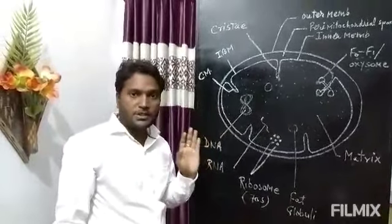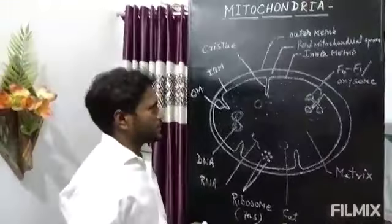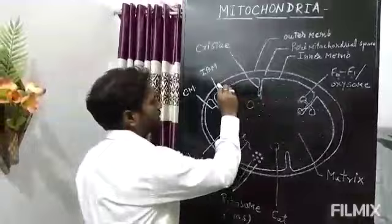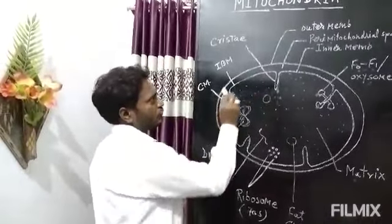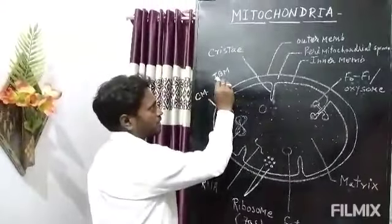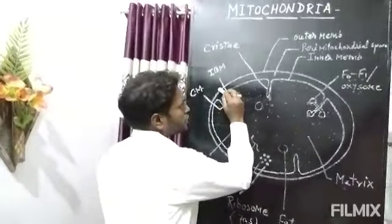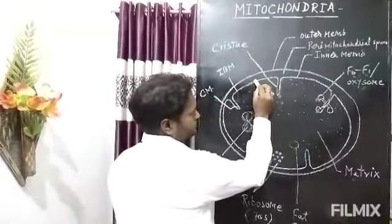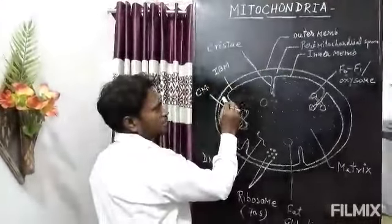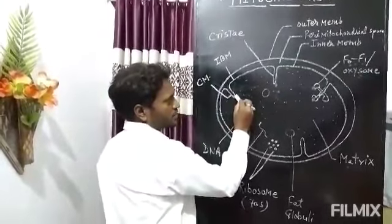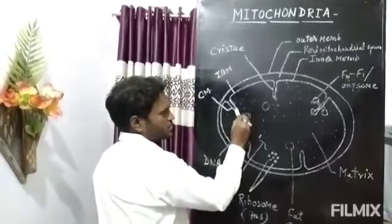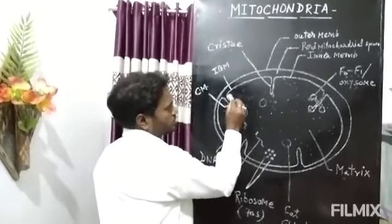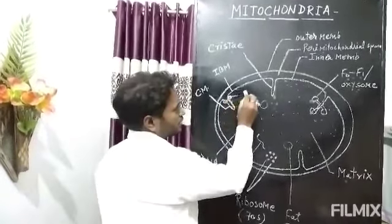Now I will explain some special points about the structure of mitochondria. The inner membrane is divided into two parts. One is known as IBM — inner boundary membrane — which is present near or parallel to the outer membrane. The second is known as cristae membrane, which protrudes out into the matrix. Cristae are attached to the inner boundary membrane through a tubular pore known as cristae junction.